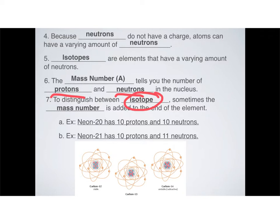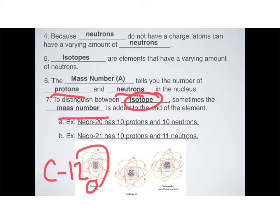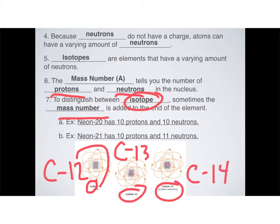So how is mass number used? Because it gives us the number of both protons and neutrons, it's used to distinguish between different isotopes — remember, isotopes are elements that have a different amount of neutrons. All you do is take the name of the element, for example carbon, and add the mass number at the end: carbon-12, carbon-13, carbon-14. You take the name and add the mass number to the end. Pretty useful.